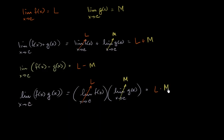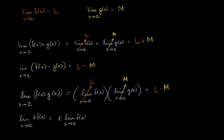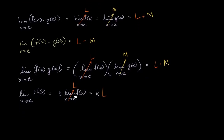The same thing applies if instead of having a function we had a constant. The limit of k times f of x as x approaches c, where k is just some constant, is the same thing as k times the limit of f of x as x approaches c, which equals k times L. This is often called the constant multiple property.